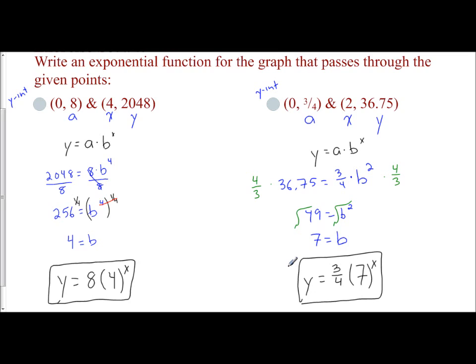So once you get the pattern down of labeling your a, your x, your y values, it's pretty easy to do. You plug in what you know to solve for b, isolate it first by getting rid of your coefficient of a by doing the opposite operation. And then work with the exponents. You can use rational exponents to cancel them out, or you can use roots to cancel them out.